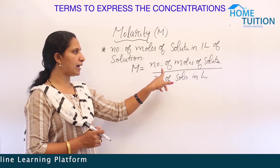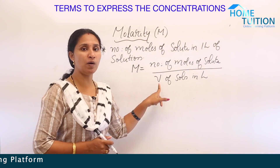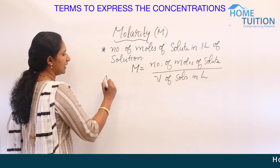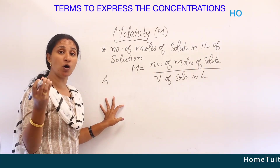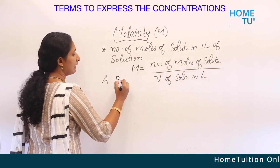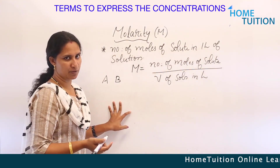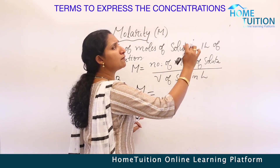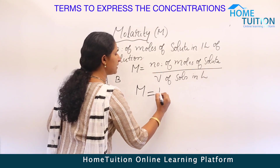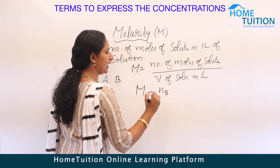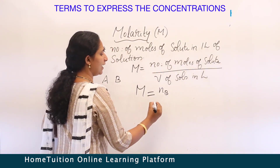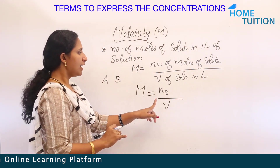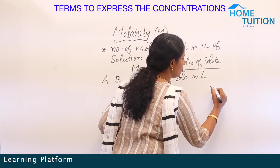M equals the number of moles of solute divided by volume of solution in liters. If we let A be the solvent molecule and B be the solute particles, we can rewrite molarity as NB — number of moles of solute — divided by V, the volume of solution in liters. How can we find the number of moles?